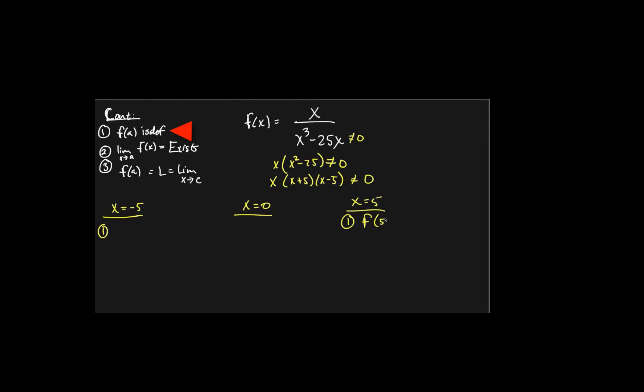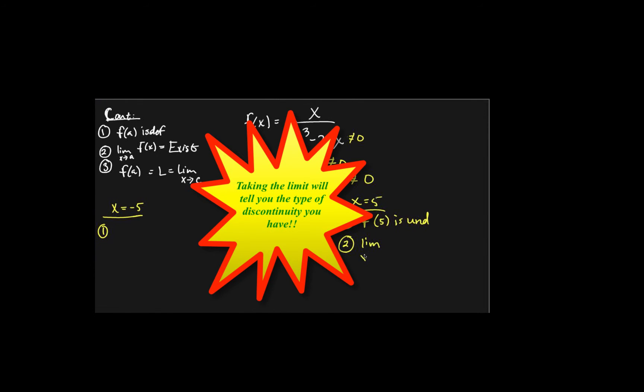So that if we do that, we know automatically the first rule is failed because it came from the denominator and is undefined. We know it's already discontinuous, so we just got to figure out what type of discontinuity it is, and we do that by taking the limit.